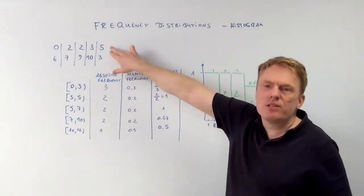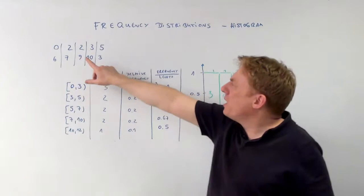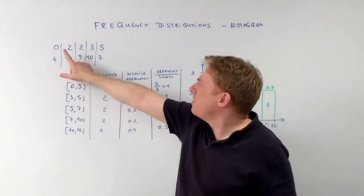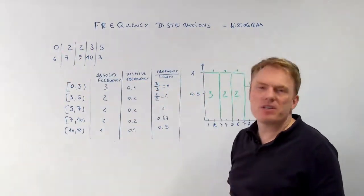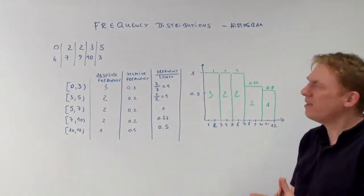For example, take a look at those data. We have 10 different values: 0, 2, 2, 3, 5, 6, 7, 9, 10, and 3.